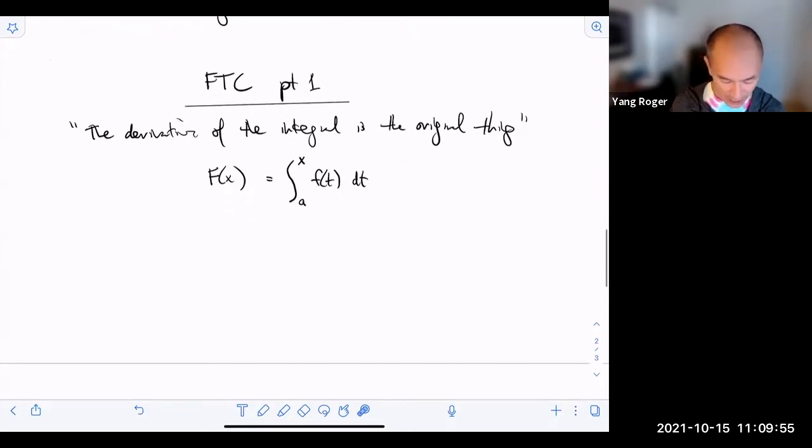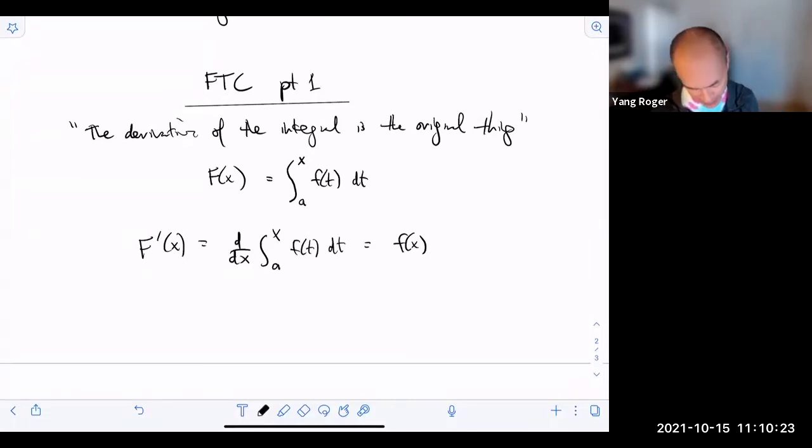So what the fundamental theorem of calculus tells us, it tells us that if you were to take the derivative of this guy, the derivative of this function, which is I differentiate this guy, what do you get? You just get f(x) coming out. So I started with little f, I found an integral, I took a derivative. Basically, it's like you get the original thing back. You just stick in x instead of a t.